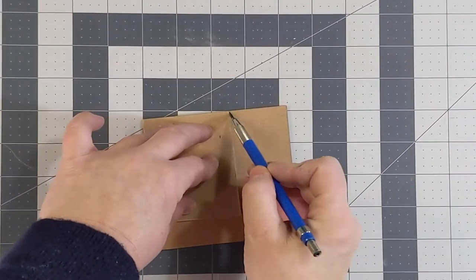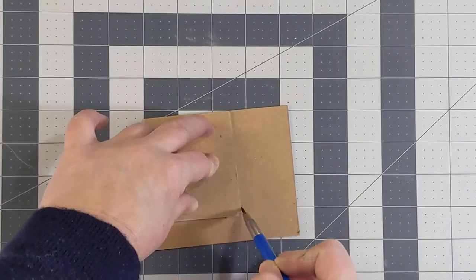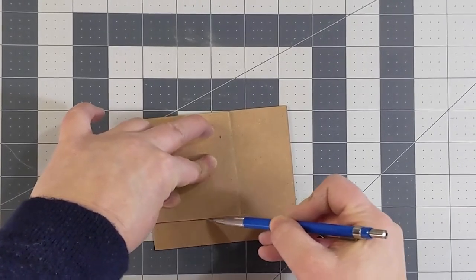Use the first board to mark the outlines of the second board. Cut and sand like you did the first board.